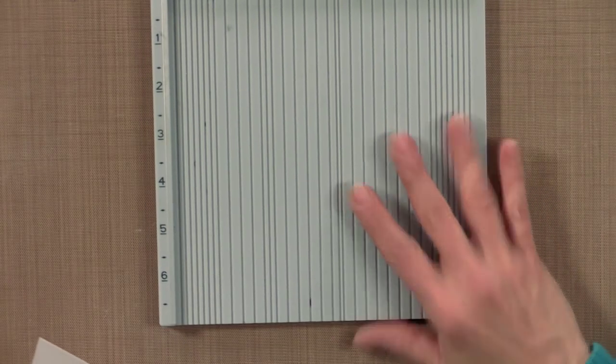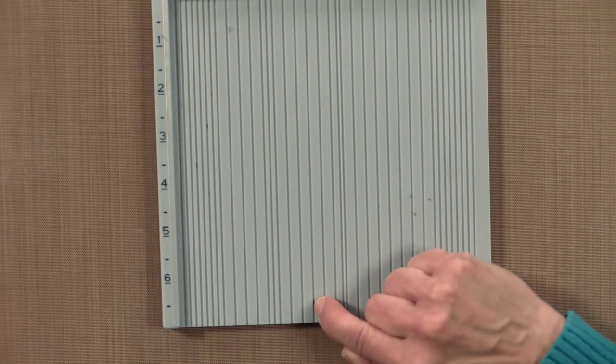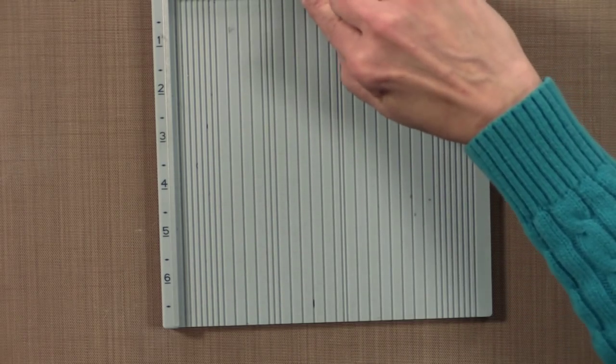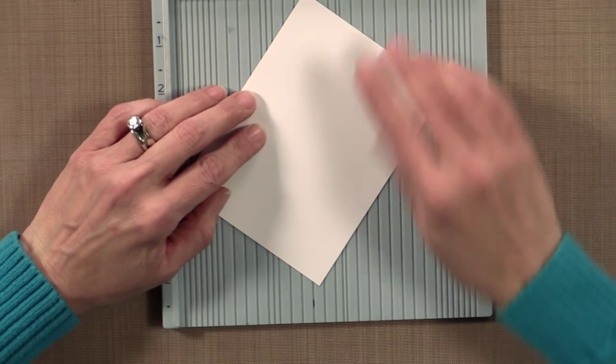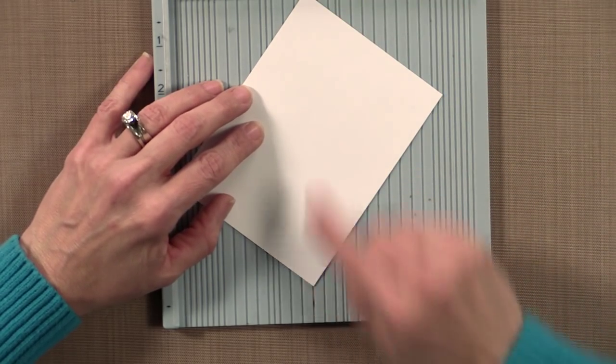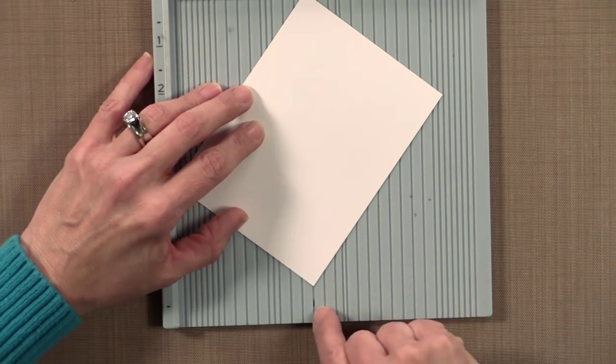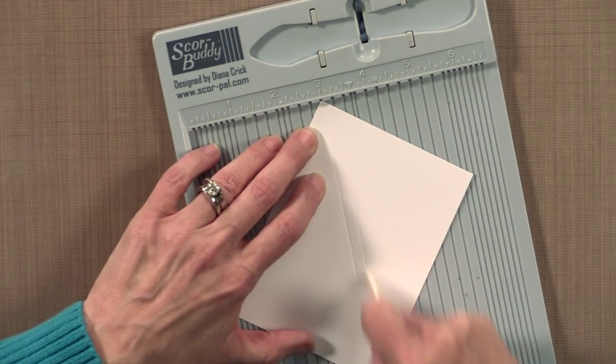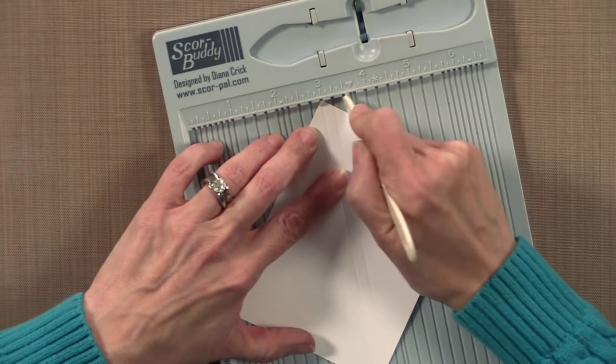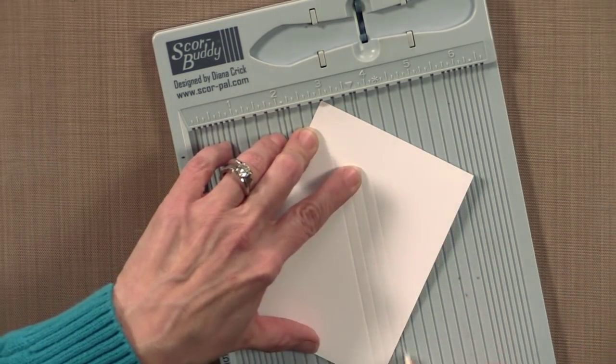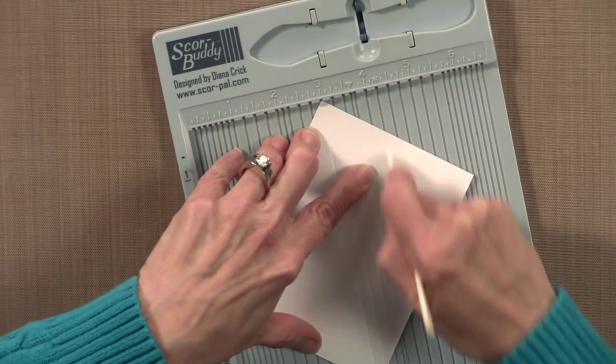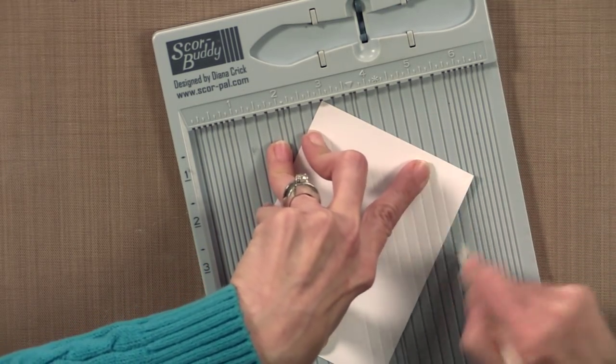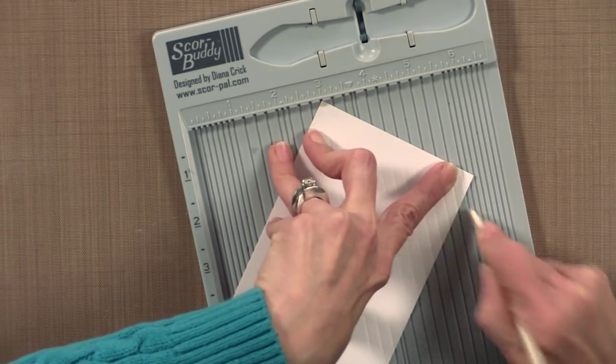And what I've done with my score buddy is, I've put a little bit of Sharpie right here on the three inch mark so that I can easily see where the bottom of three inches is along with the top. And I'm going to put one corner at the top of three inches and the bottom, the opposite corner, at the bottom of the three inch mark. And I'm going to score lines a quarter of an inch apart down this entire panel. And the score buddy is great for this because you've got all the quarter of an inch marks. You don't have to move it around too much to get exactly what you want.